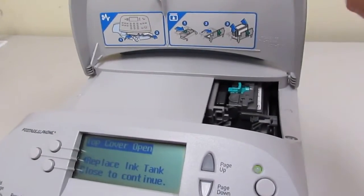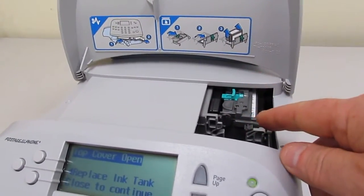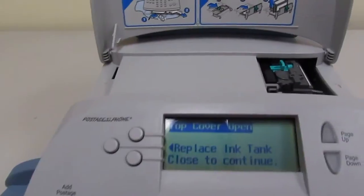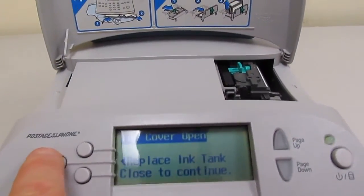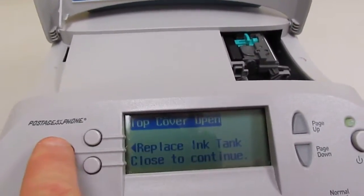First open the top cover. That will expose the mechanism, but to get it to move forward we'll need to ask it to replace ink tank.